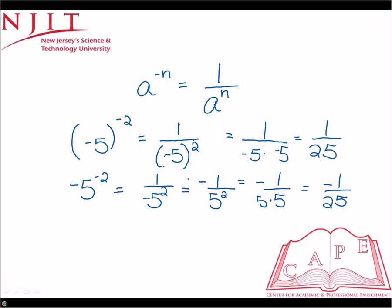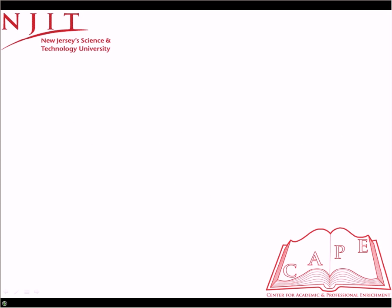Now we'll do one more example, except now we're going to be dealing with a fraction from the beginning. Say if we had 2 over 3 raised to the minus 3. Now because it's already a fraction, we don't necessarily have to do 1 over, but the inverse is just simply flipping it. So we're going to flip this and make it 3 over 2 raised to the positive 3.